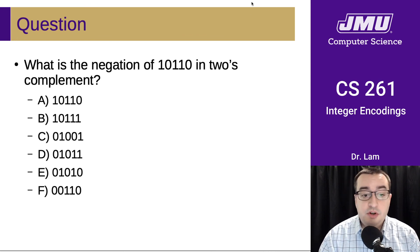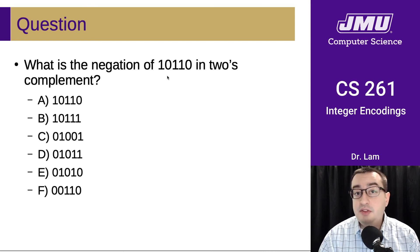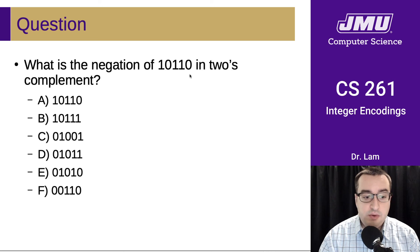Okay, so remember the trick that we just learned, which is to flip all the bits and add 1. So this will be 01001. And then we add 1, which I believe gives us E, if I'm doing this correctly.